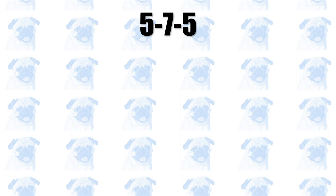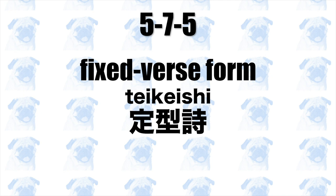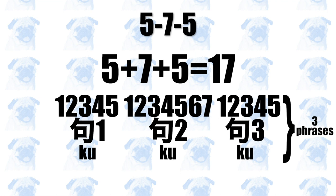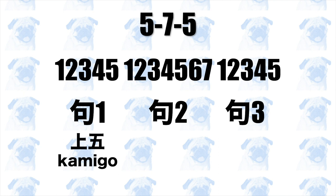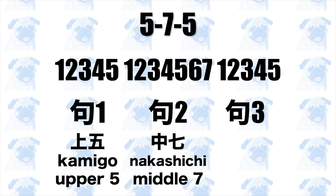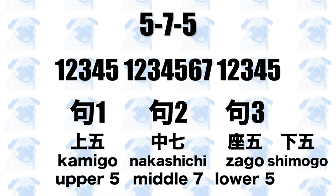A haiku has three phrases, or ku, and these phrases have 5, 7, and 5 moras respectively. This rhythmic pattern is commonly referred to as gohichigo. Each of the three phrases has a special name: the first phrase is kamigo (upper 5), the second is nakashichi (middle 7), and the third is zago or shimogo (lower 5). I won't be using these terms in this video, but I thought some of you might be interested in the jargon.